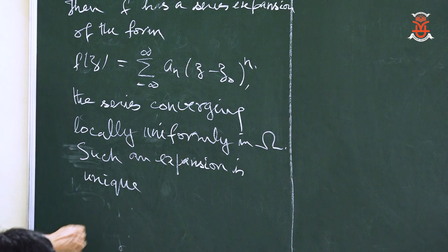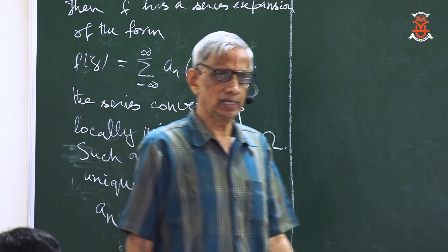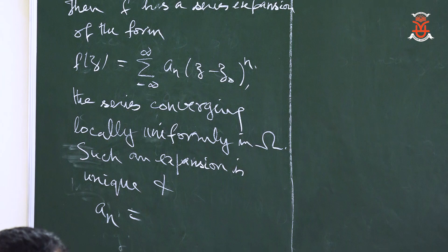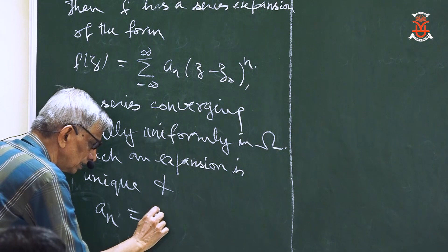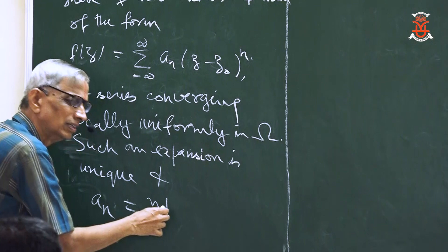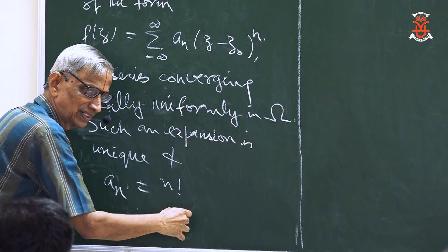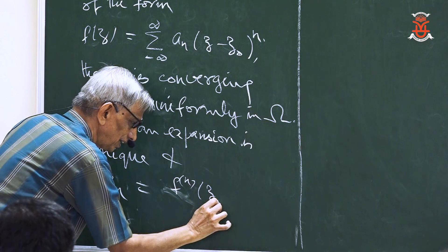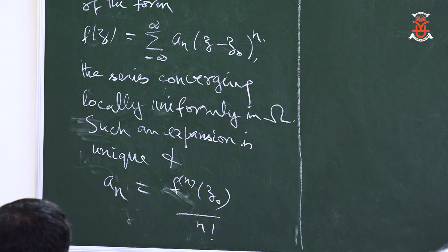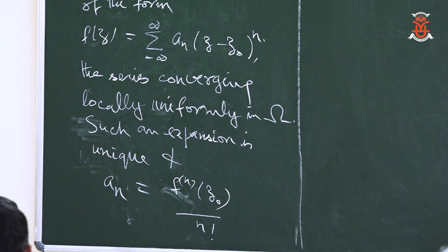In fact, you can write down what the coefficients are. They are given by the same formula as in the power series case. The coefficients are given by 1/(2πi) times a contour integral, and n varies over all integers — positive or negative.